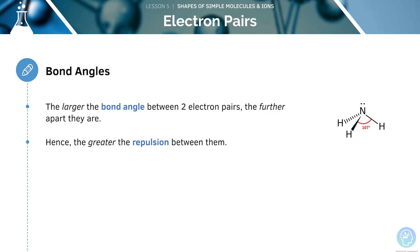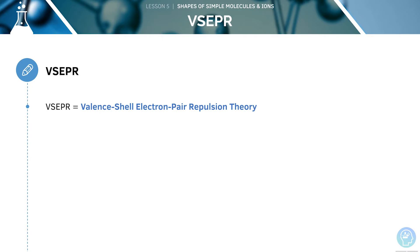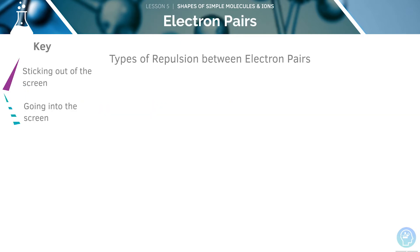VSEPR stands for valence shell electron pair repulsion theory. Here, we will look at the repulsion of different types of electron pairs, how it influences the bond angle, and the different shapes that will be produced. Lone pair–lone pair has the biggest repulsion and angles, followed by lone pair–bonding pair with the second biggest repulsion. Bond pair–bond pair has the smallest repulsion and angles.